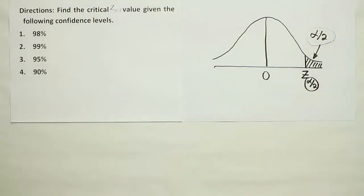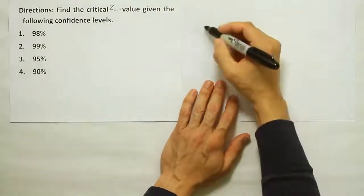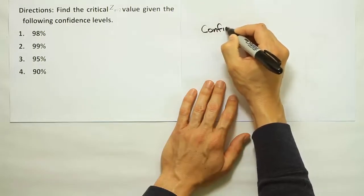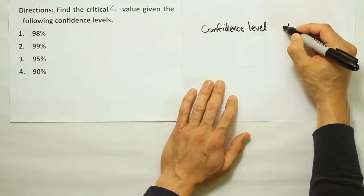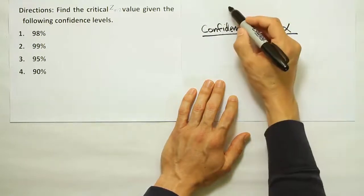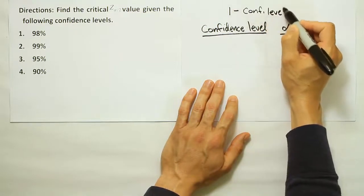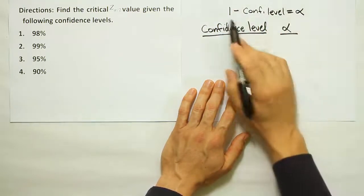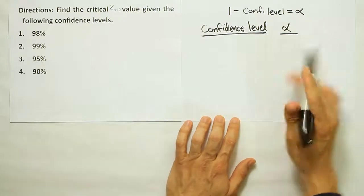Well, that's actually not so bad. Figuring out alpha is not a difficult thing to do because there's a nice little relationship that we have between the confidence level and alpha. So let's go ahead and look at that relationship. Okay, so it turns out that 1 minus the confidence level is actually equal to alpha.